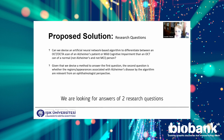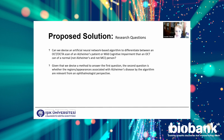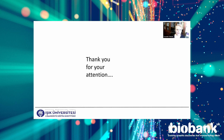We are looking for answers to two research questions. First, can we devise an artificial neural network-based deep learning algorithm to differentiate between an OCT or OCTA scan of an Alzheimer's patient or mild cognitive impairment versus a scan of a normal person? In the second question, given a method to answer the first, are the regions associated with Alzheimer's disease by the algorithm relevant from an ophthalmologist's perspective? Thank you very much for your attention.